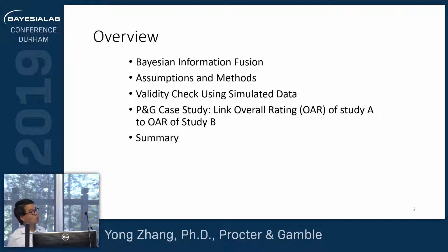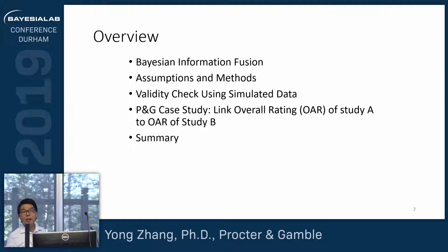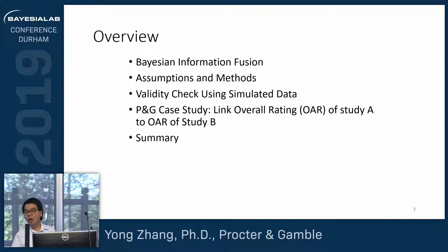The general idea is, if you have different types of studies, or similar studies, you can run match analysis or build a match network model on different sets of data — you can glue the information together. But what if you have totally different studies in different contexts, in different regions? How can you fuse the information together using a Bayesian belief network?